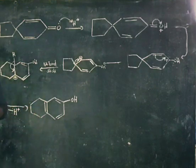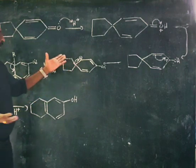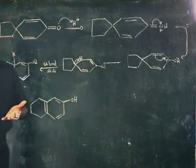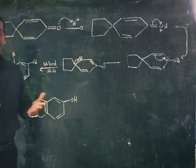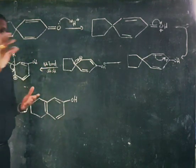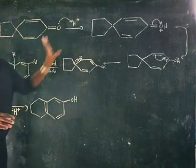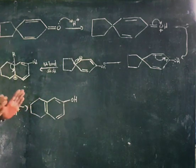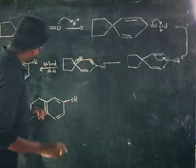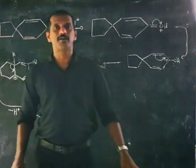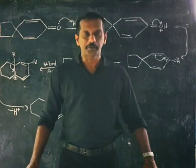For examination purposes, to distinguish between Dienol-Phenol rearrangement and other rearrangements like Wagner-Meerwein, observe the reactant and the reagent carefully. If it is cyclohexadienone with dilute acid, the mechanism will definitely be Dienol-Phenol rearrangement. That is all about Dienol-Phenol rearrangement — wait for the next video, thank you.